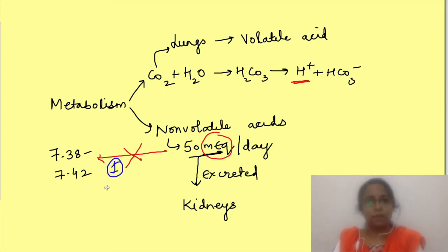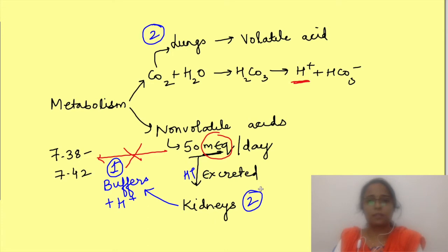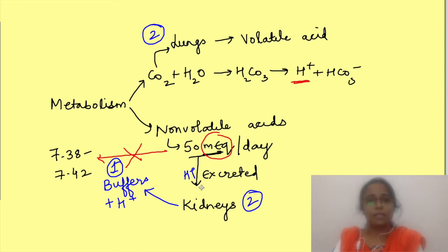So there are two things happening. First, there are buffers which act as the first line of defence — they bind with the acid produced to prevent an immediate change in pH. Second, the lungs and kidneys take part in excretion of acid. Lungs excrete carbon dioxide and kidneys excrete the non-volatile acids. Kidneys also restore the buffers that were used up in buffering. We will speak mostly from the perspective of handling acids, though these mechanisms can work both ways to handle bases as well.